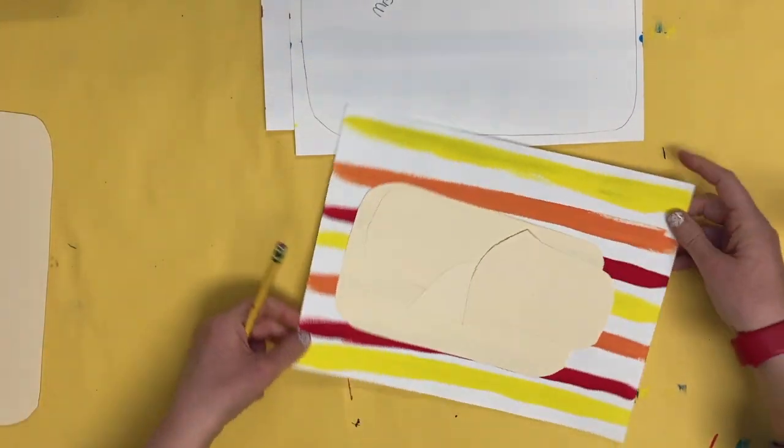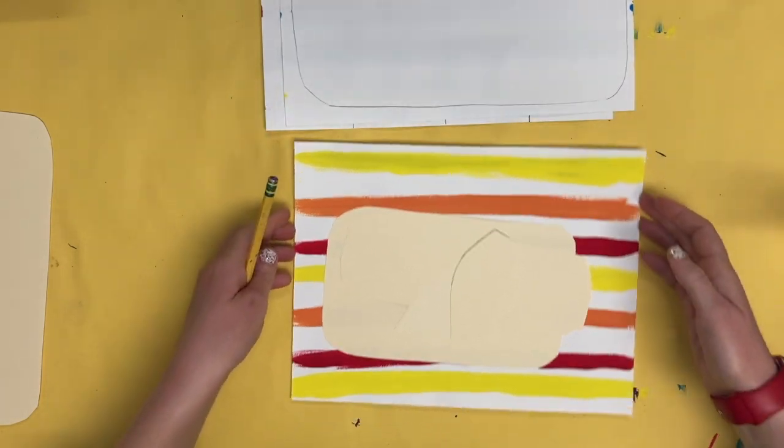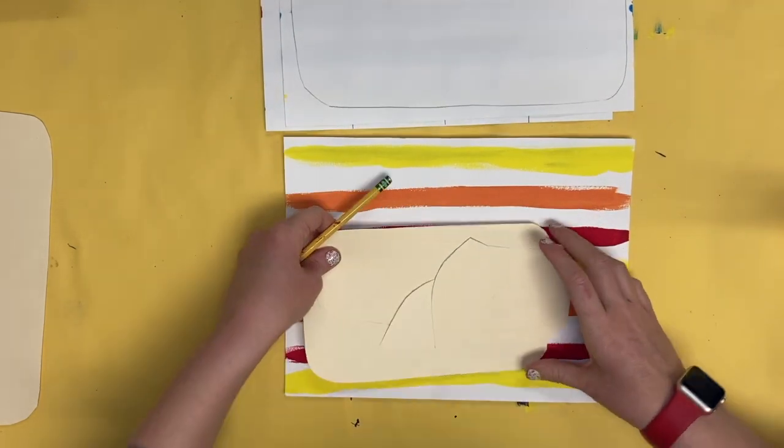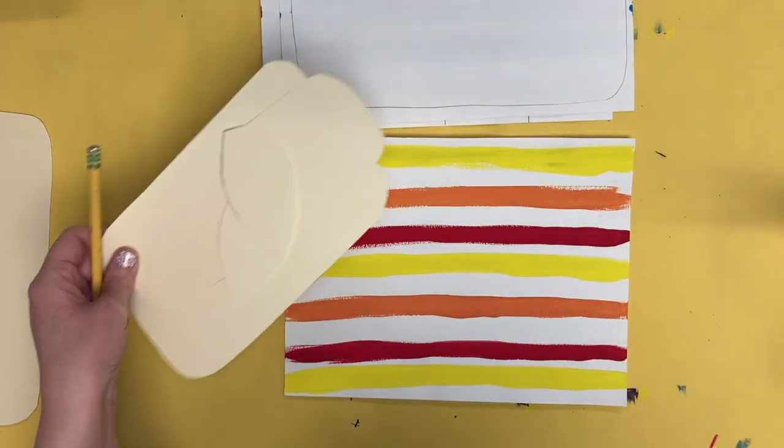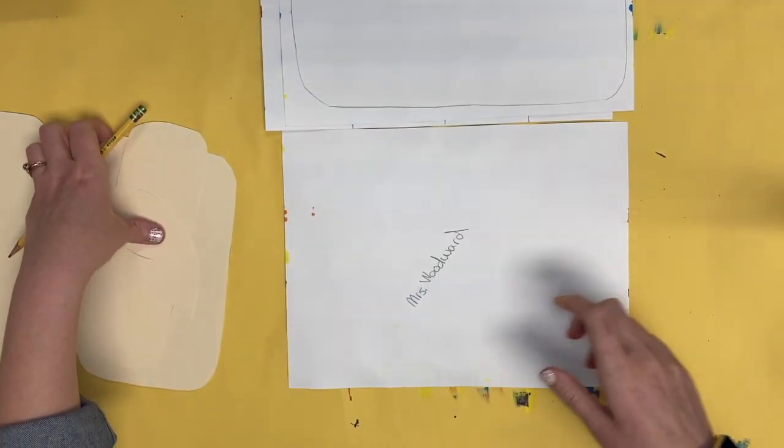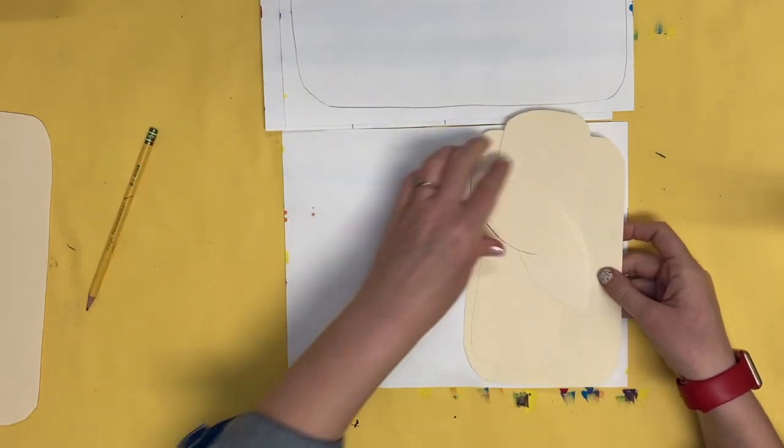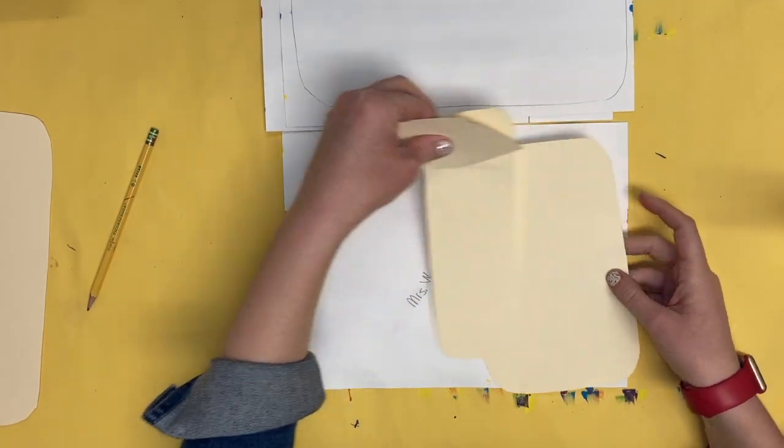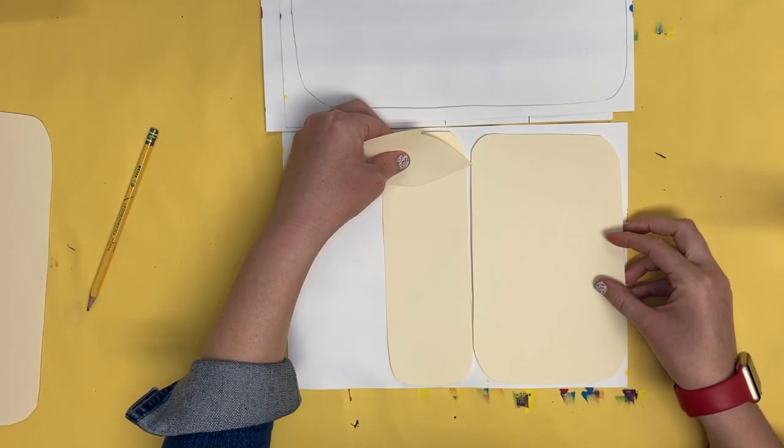Now the last piece of paper has the most stuff traced onto it. All of these parts are for the neck and the head. I'm going to flip my piece of paper over. Make sure you're tracing all the shapes on the back of your paper.